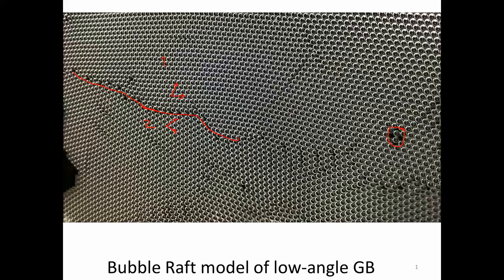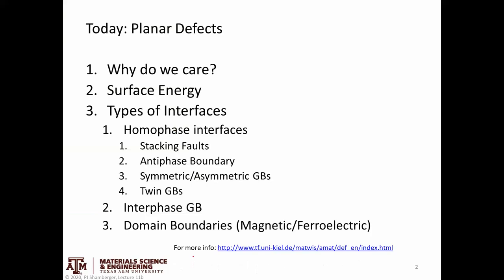Here I'm just looking at a line, but if we think about this as a three-dimensional crystal, that line would extend into and out of the surface — that would be the grain boundary. We're going to talk about grain boundaries and other two-dimensional defects today: why we care, surface energy, different types of interfaces, general and special grain boundaries, interphase grain boundaries — a boundary between two different phases — and magnetic domain boundaries.